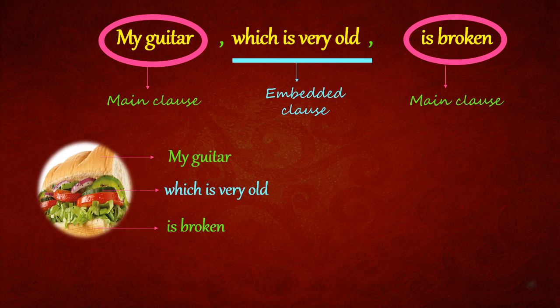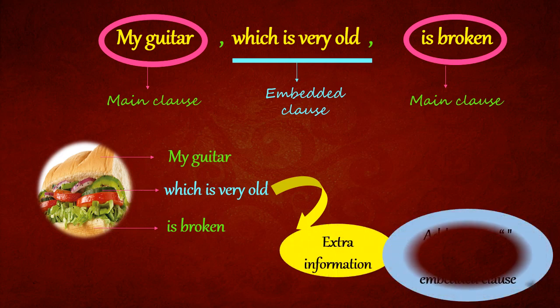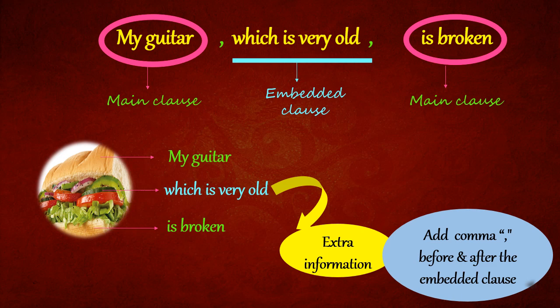As we've already seen, the embedded clause gives extra information. In the given sentence, which is very old gives extra information. Remember to add a comma before and after the embedded clause.